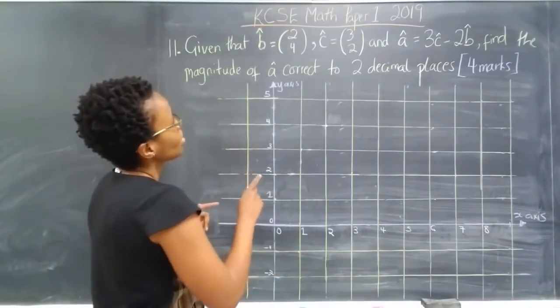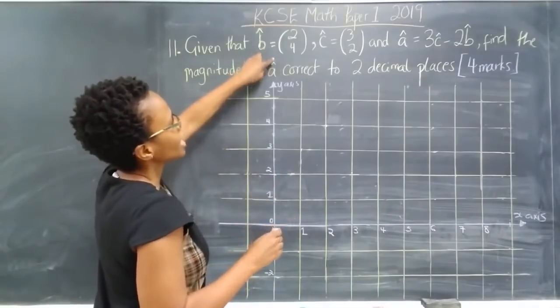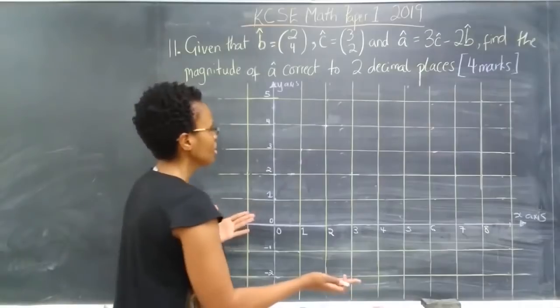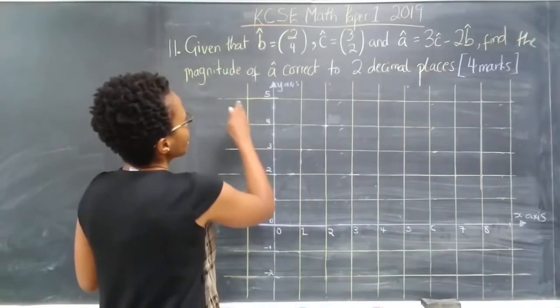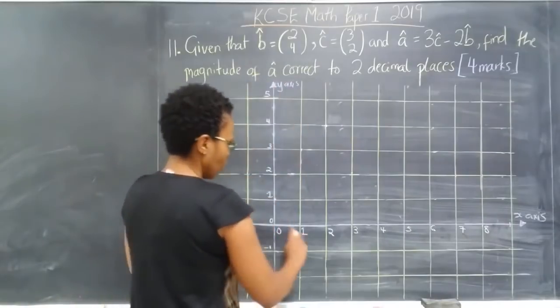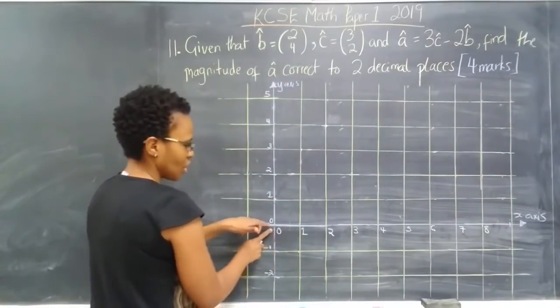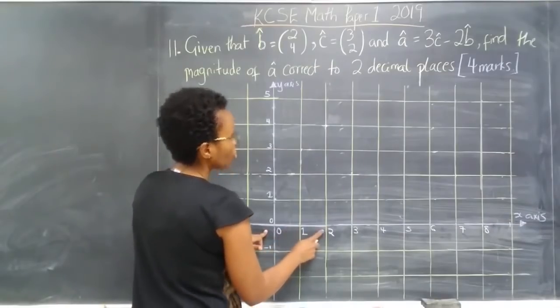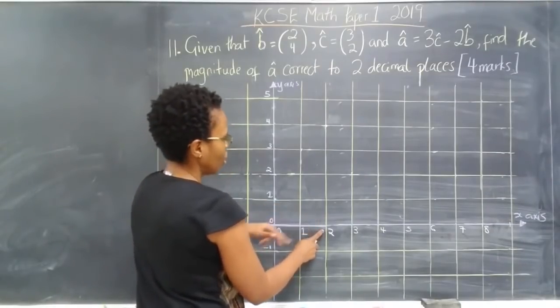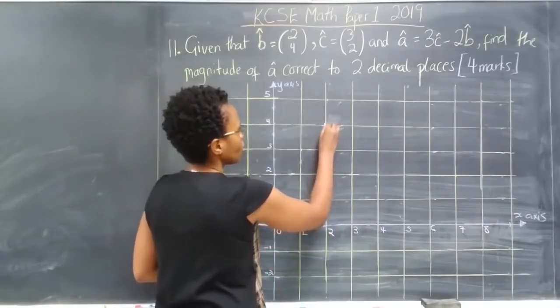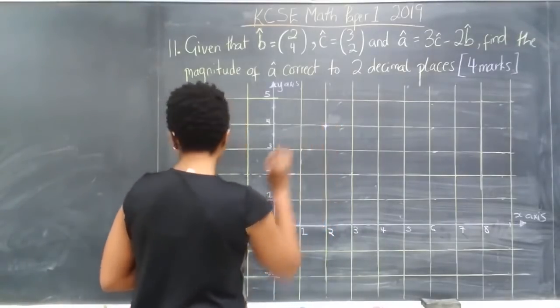Let's go ahead now and evaluate this using this grid, but you wouldn't have to, as I mentioned earlier. So B has coordinates 2 along the x axis, so this is our point (0, 0). We go 2 along the x axis, 1, 2, and then 4 along the y axis. So 1, 2, 3, 4. So this is our point B.